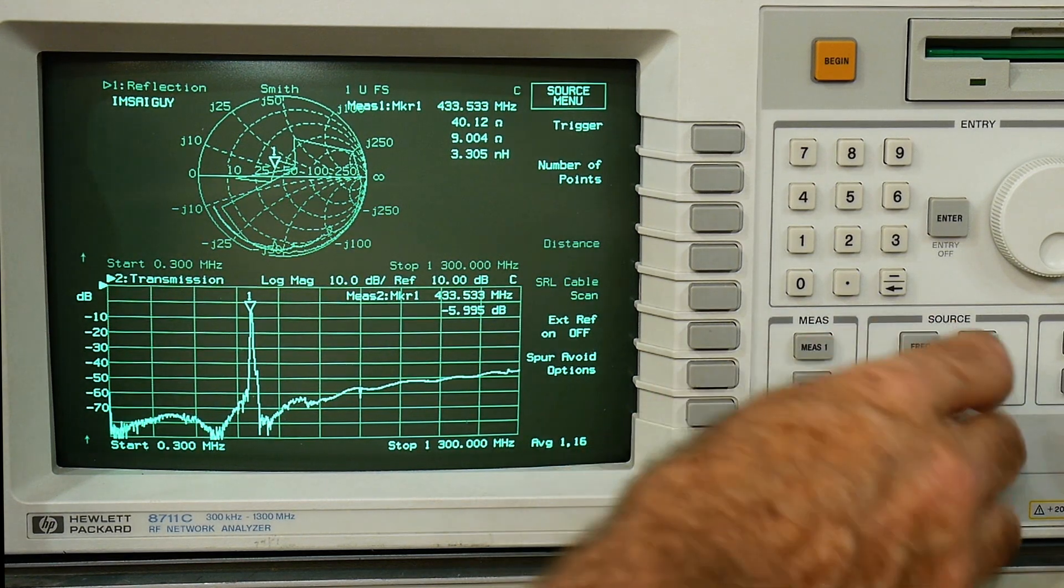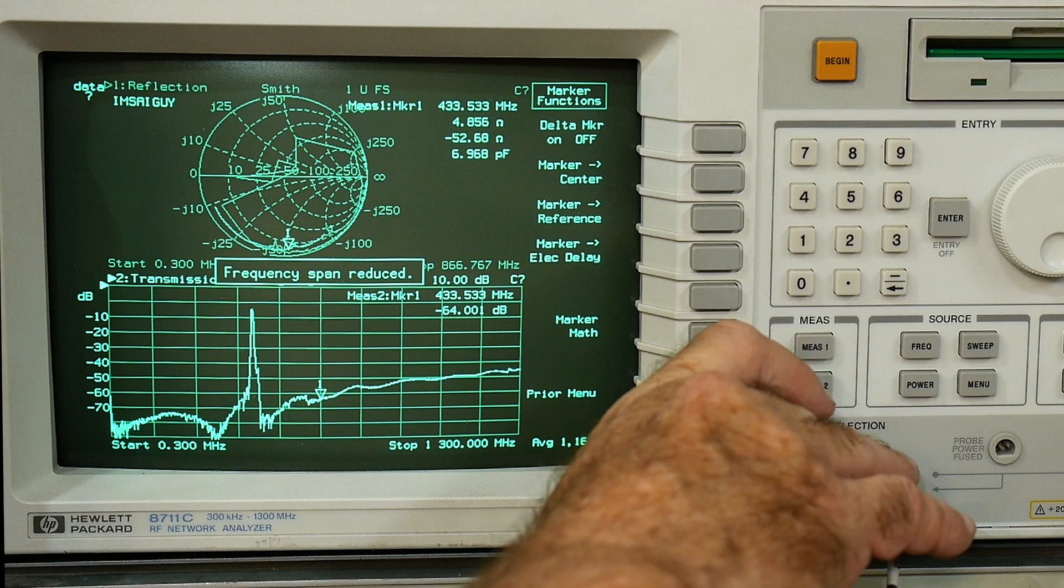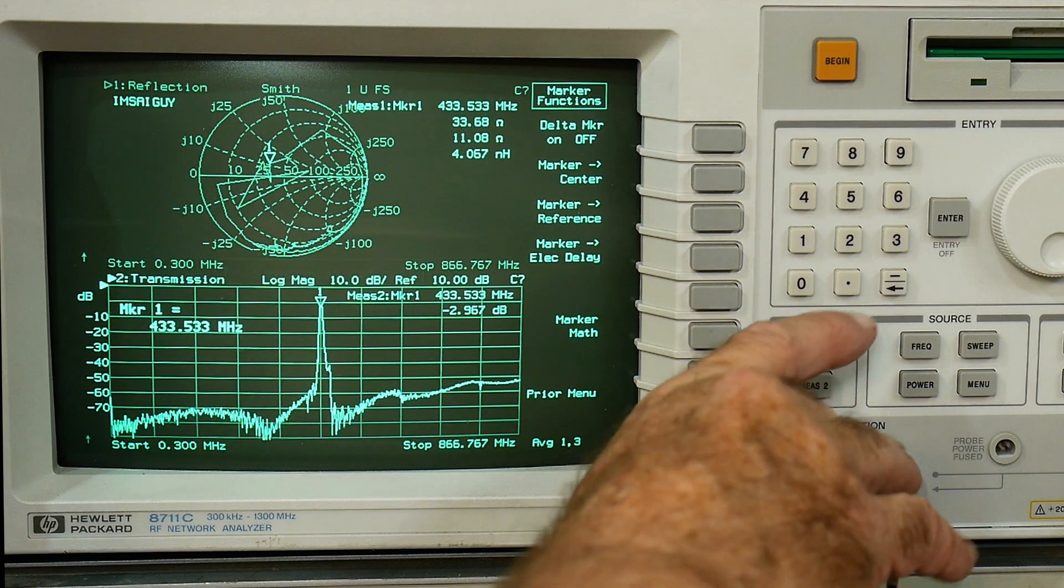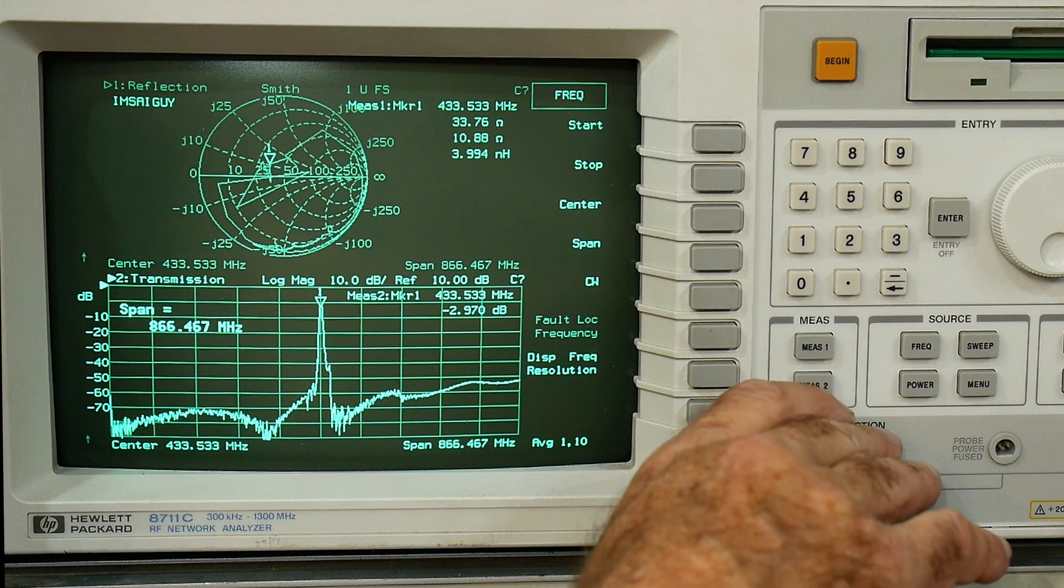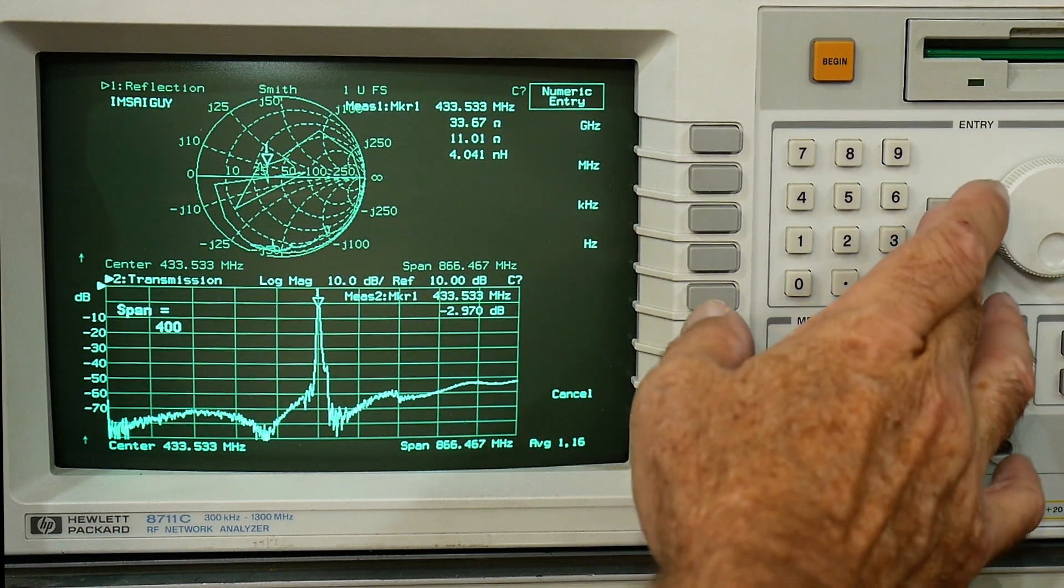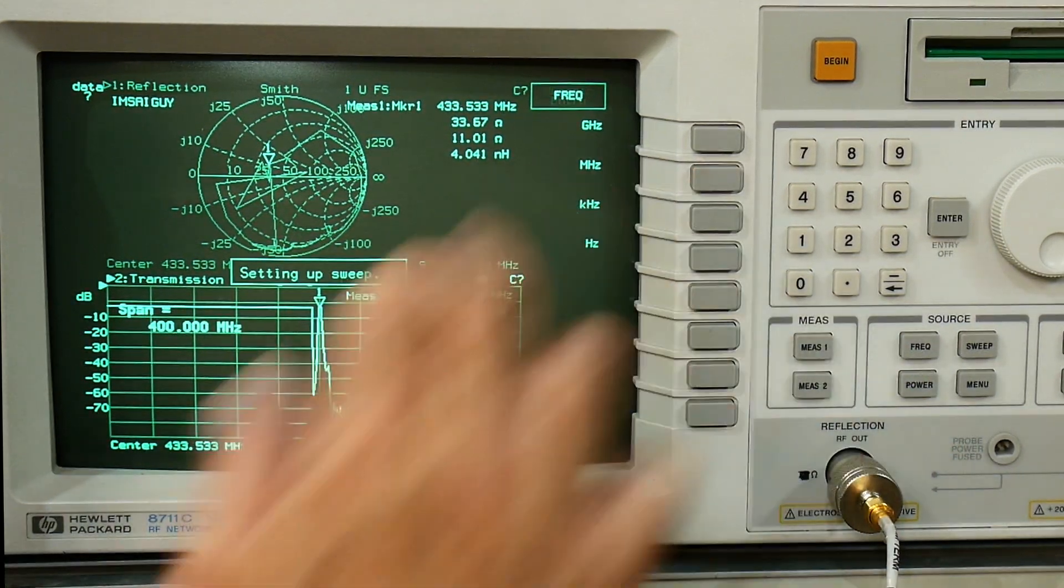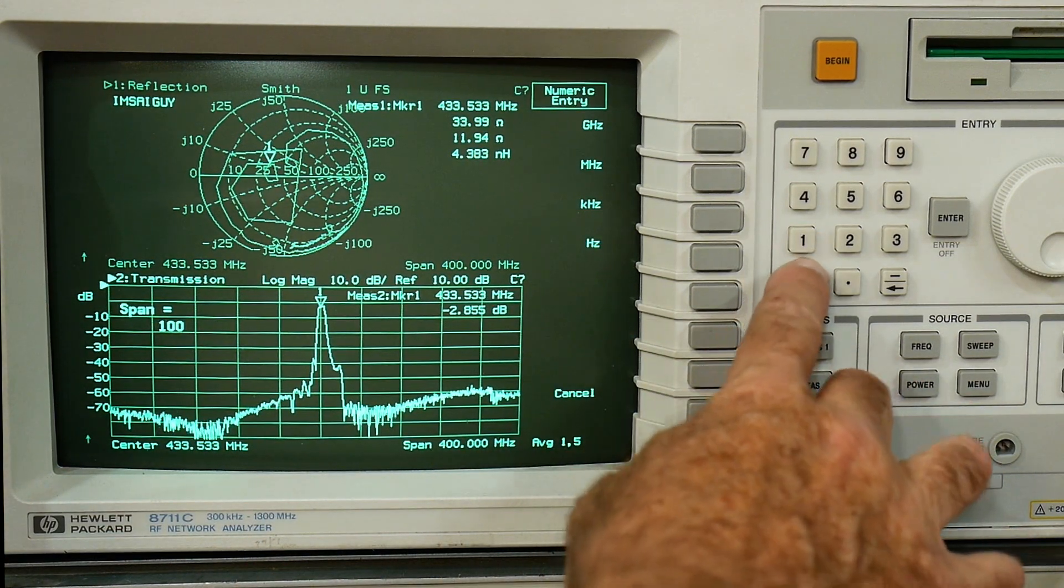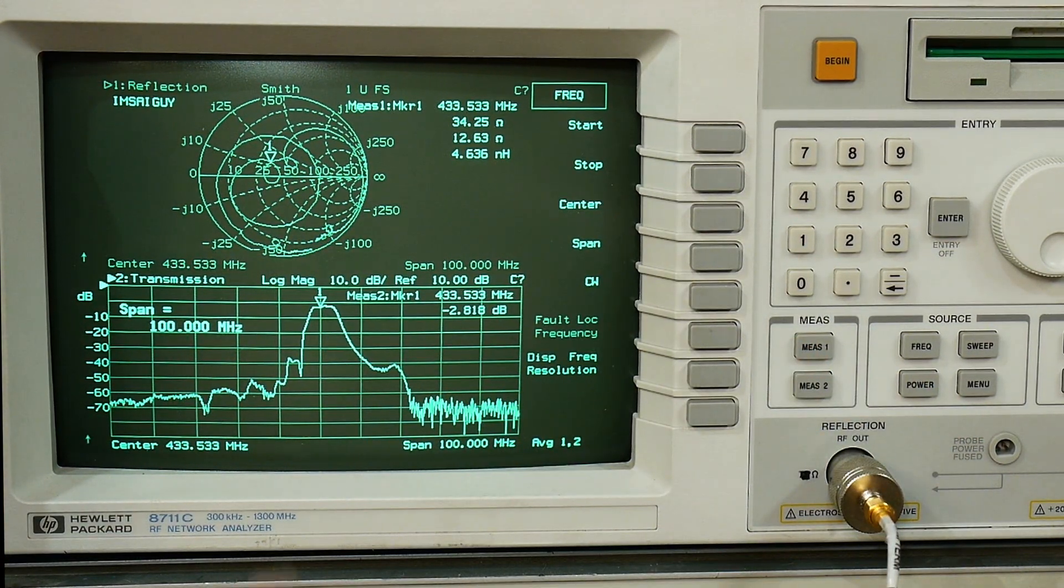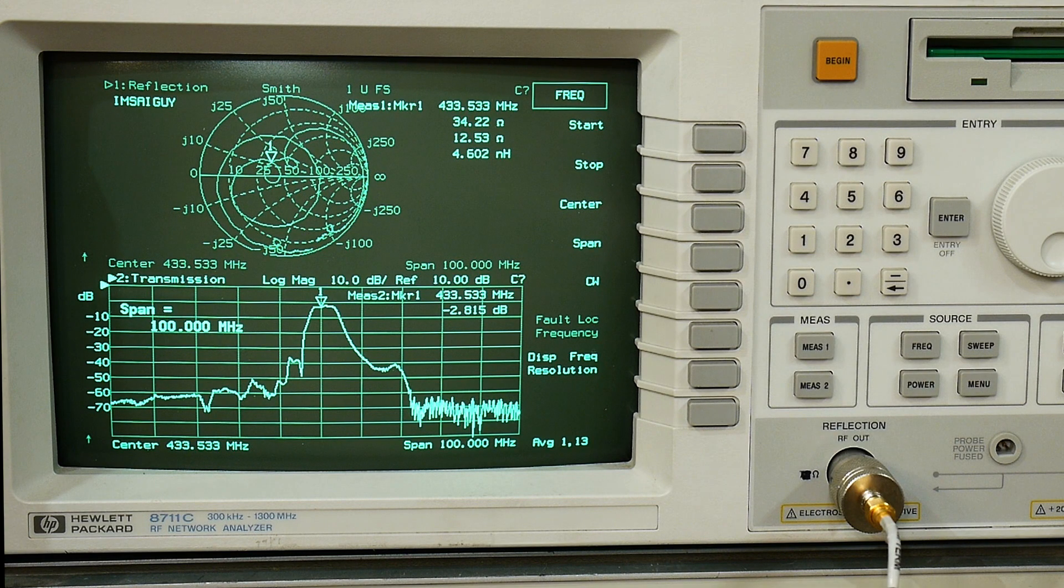We can do marker functions, go to center, and then we can do frequency span and it's set to something crazy. So let's go to 400 megahertz. There we go. And let's go to 100 megahertz. There we go there's our filter. Should look familiar, I've swept this filter out on other videos too. So yeah it's supposed to look just like that.